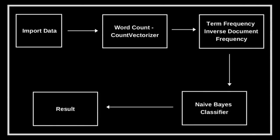Let's understand the complete overview of how we are going to implement this. The first step is to import data — we are using the Fetch 20 Newsgroups dataset. Then we use word count with Count Vectorizer, which counts how many words there are. Then we have Term Frequency–Inverse Document Frequency, which defines the weight of each word in the document. Then we use the Naive Bayes classifier approach to categorize the data, and then we get the final result.